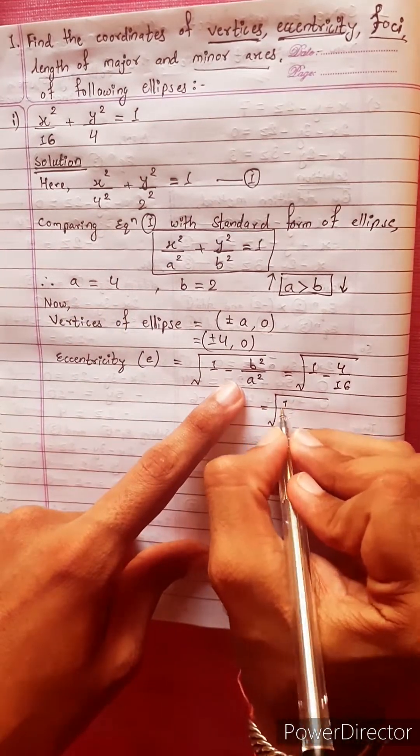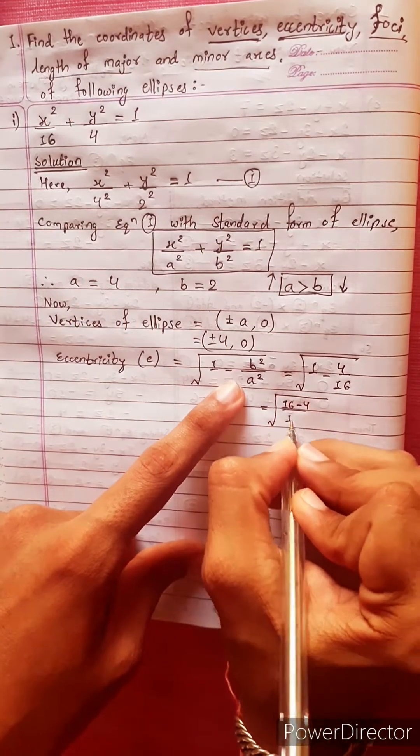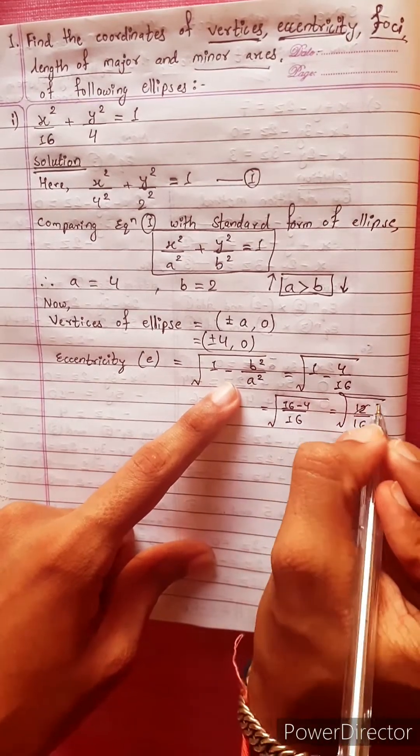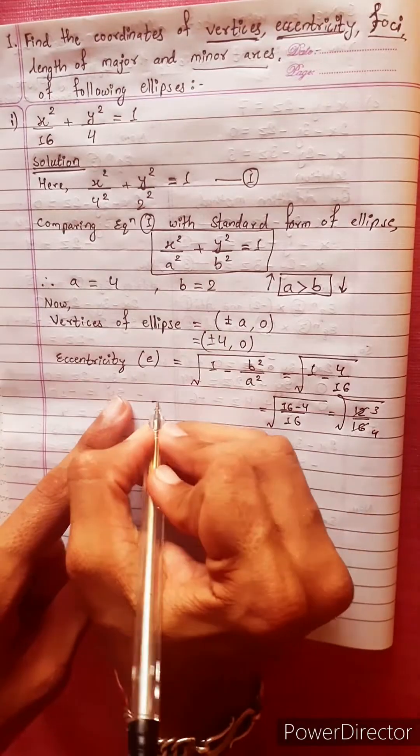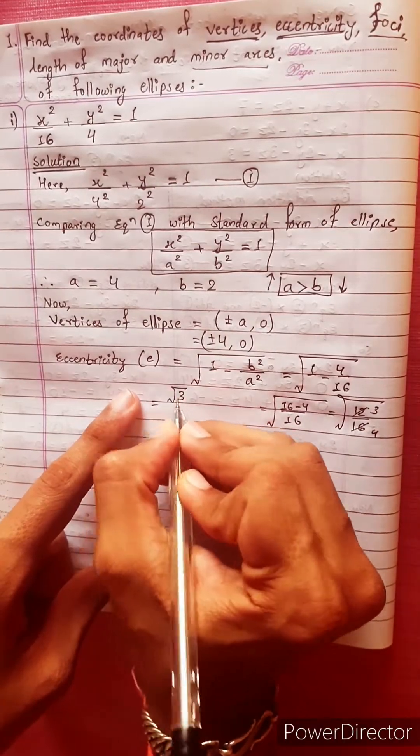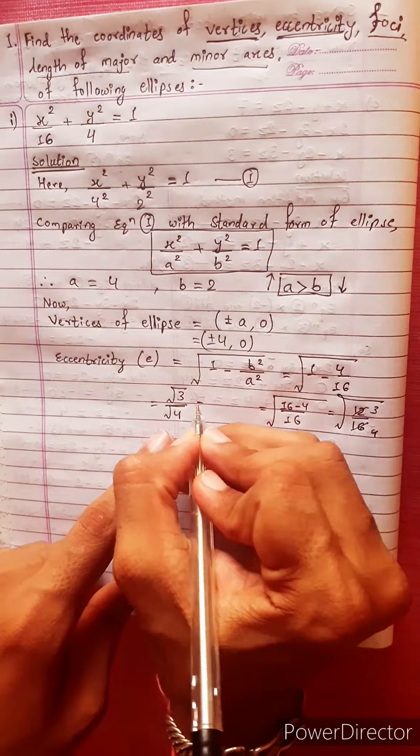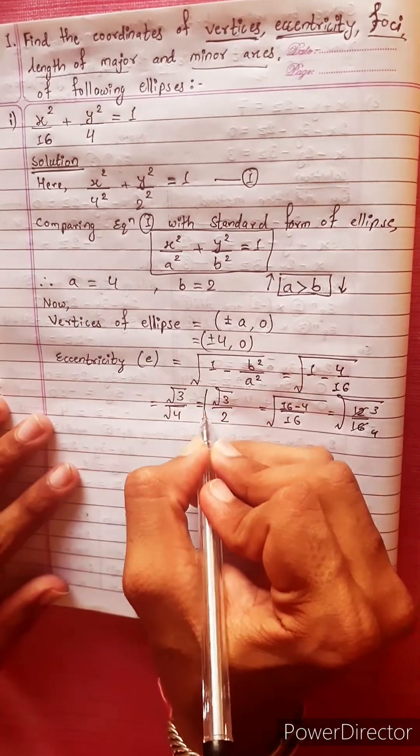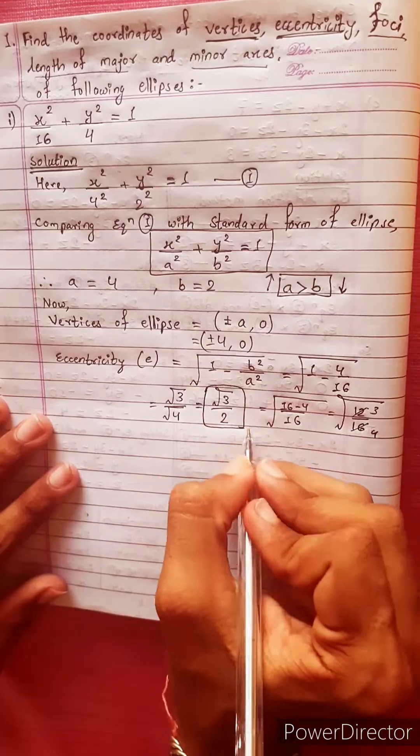Equals to 16 minus 4 divided by 16, equals to 12 by 16, which simplifies to 3 by 4. Equals to under root 3 over under root 4. Therefore, e equals to root 3 by 2.